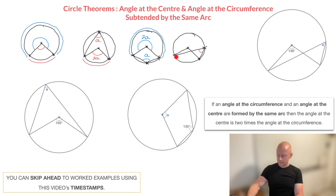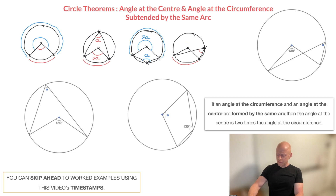Looking at this angle at the circumference, we can see that the arc subtending it is this one right here — I'll draw around it in red. That's the arc. Now that we know the arc forming the angle at the circumference, we choose the angle at the center which is being formed by the same arc — that would be this angle at the center right here.